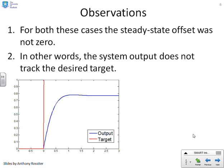Some observations then. In both these cases, the steady state offset was not 0. Now, this figure here is actually for example 1, where you remember the offset. And here I'm going to give you was 3 over 13. Okay.